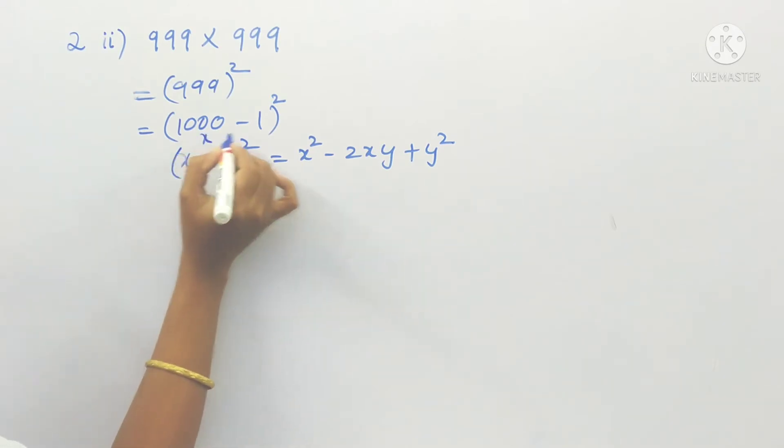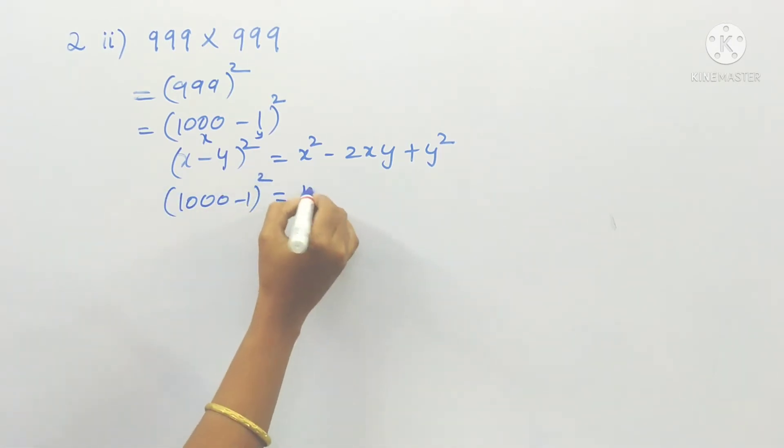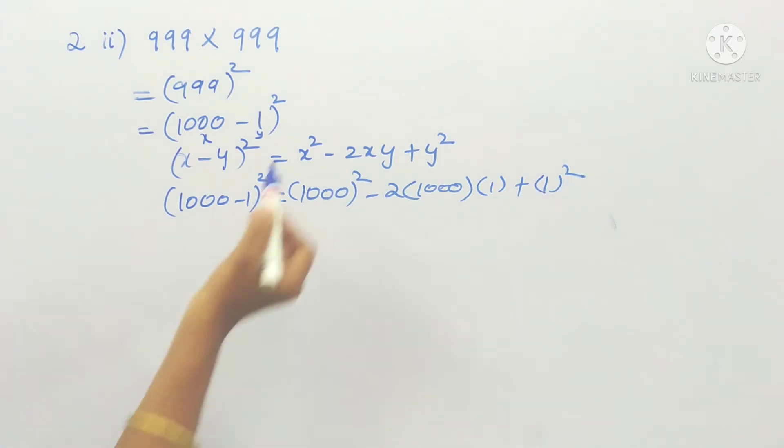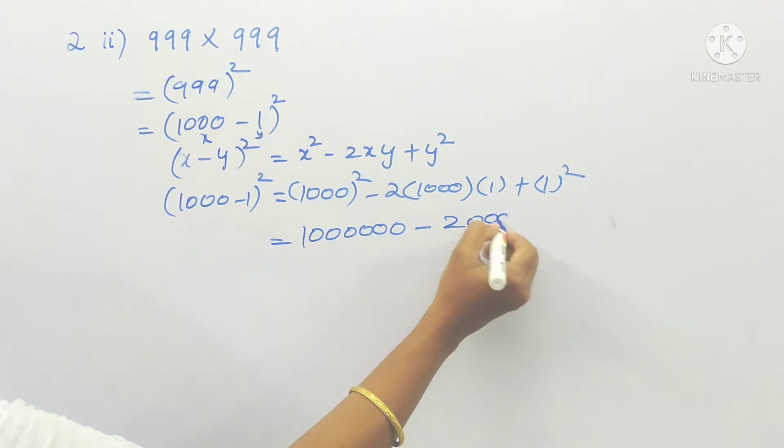So it is x squared minus 2xy plus y squared. So in the place of x, 1000 is there. In the place of y, 1 is there. So 1000 minus 1 whole square is equal to 1000 squared minus 2 into 1000 into 1 plus 1 squared. Just substitute 1000 in the place of x, 1 in the place of y. So here already three zeros we have, so just double it. Then it will be six zeros minus 2 into 1000: 2000 into 1 also same, plus 1.